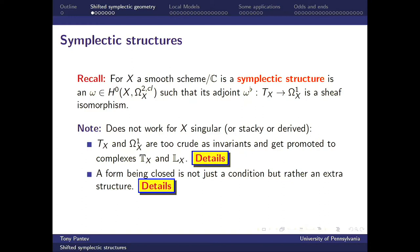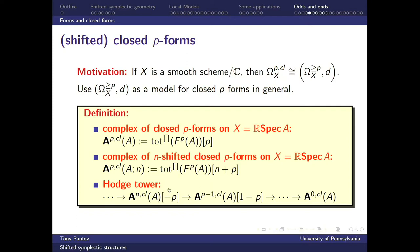Closedness turns out to be a little bit subtle because now it's not a condition — not a property of the forms — but rather extra structure that you need to impose on the forms. Here is how you package this to work with it concretely. If you start with a smooth scheme over ℂ, you can think about the sheaf of closed algebraic forms of degree p as the kernel of the de Rham differential, but it's also quasi-isomorphic to the stupid truncation of the algebraic de Rham complex. That stupid truncation behaves very well homotopically and can be used in the derived setting for descent.